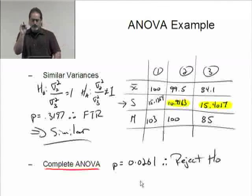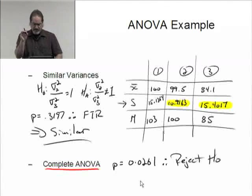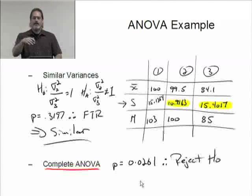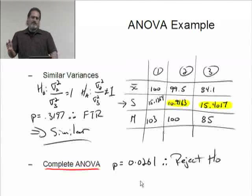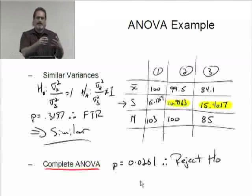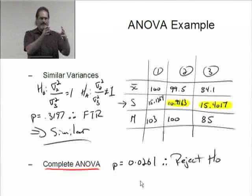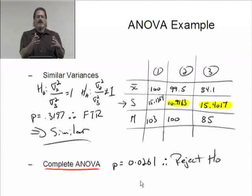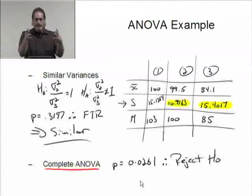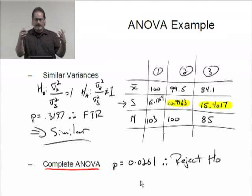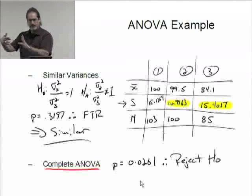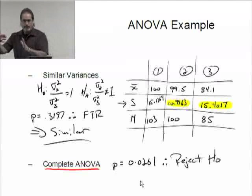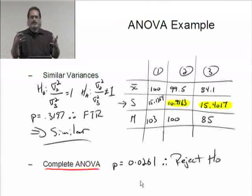To determine which is different, then what you really need to do is switch to, or go to, a multiple comparison test. Now you may be thinking: wait a minute, didn't you say earlier that one of the reasons we do ANOVA and not a bunch of t-tests is because the alpha, the probability of type 1 error, balloons on you? So we have a p-value here, but now you're suggesting that we go to this multiple comparisons and look at more p-values essentially. So won't that balloon on us?